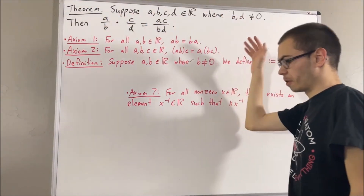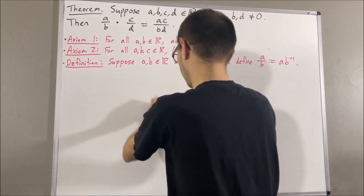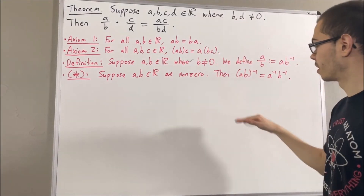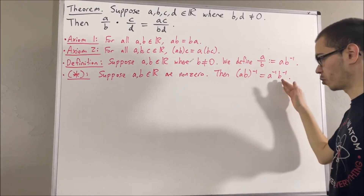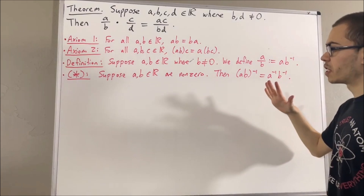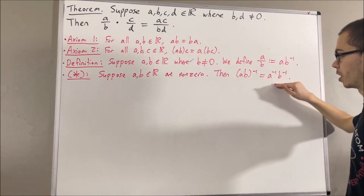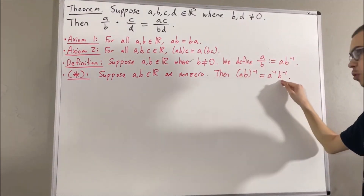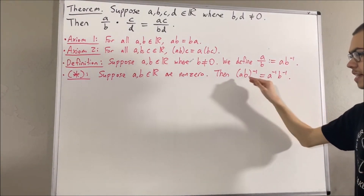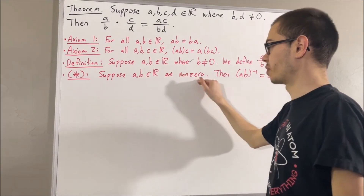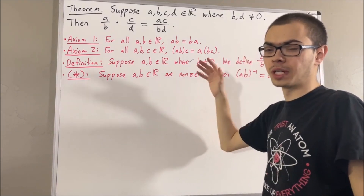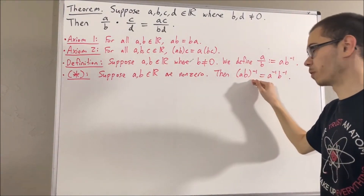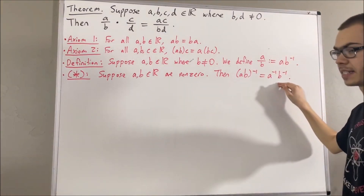Now, in proving this theorem, we are going to be using the following result which we haven't proven. Suppose A and B are non-zero real numbers. Then the reciprocal of AB is equal to the reciprocal of A times the reciprocal of B. We can make sense of this statement because since A is non-zero we can take the reciprocal of A, and since B is non-zero we can take the reciprocal of B. And since the product of two non-zero real numbers is non-zero, AB is non-zero, so we can also take the reciprocal of AB.